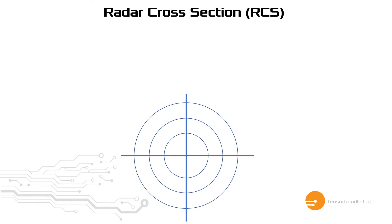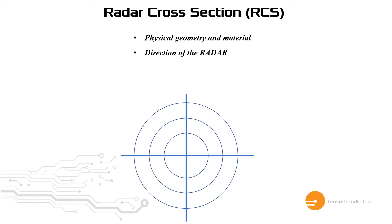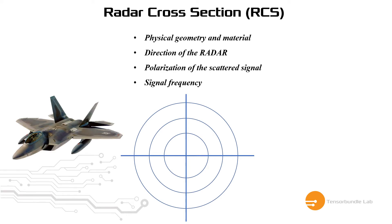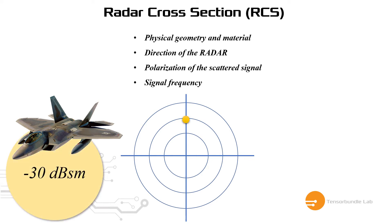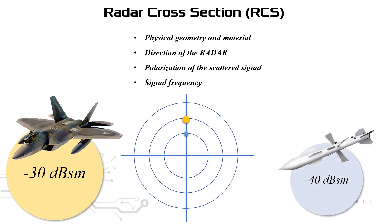RCS depends on several factors. Primarily, it depends on the physical geometry and material, and then the direction of the radar, and then the polarization of the scattered signal and signal frequency as well. The value of RCS is basically a measure of how easily detectable an object is. The lower the value of RCS, the better for military vehicles, missiles, or aircraft, because they don't want to get detected.